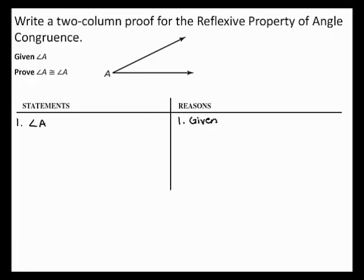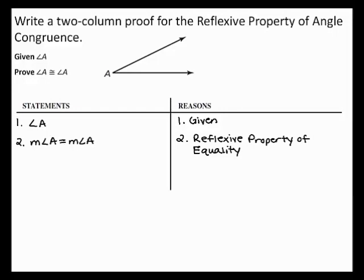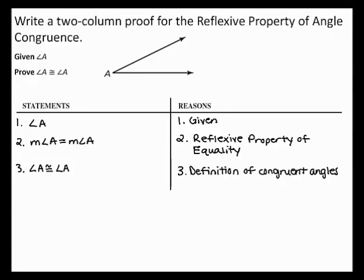Next, by the reflexive property of equality, you can state that the measure of angle A equals the measure of angle A. Finally, by the definition of congruent angles, you can state that angle A is congruent to angle A. This shows that angle A is congruent to angle A, completing the two column proof.